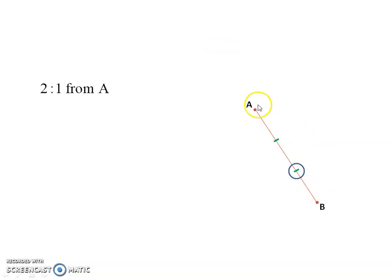One, two, three parts. I've traveled two of them. So two from A, and then there's one part that I haven't traveled.